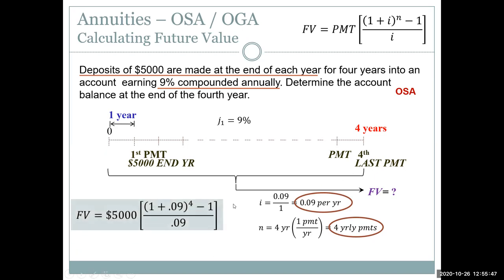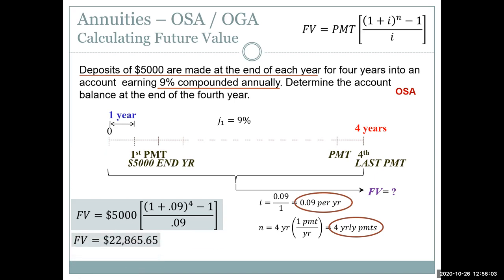Plugging into the formula: FV = 5000 × [(1.09)^4 − 1] / 0.09, and we get $23,030.54.